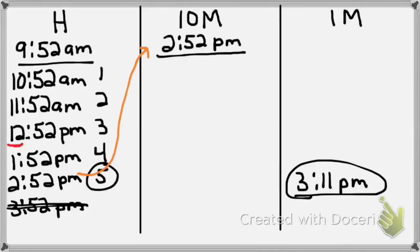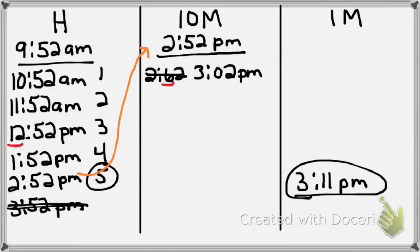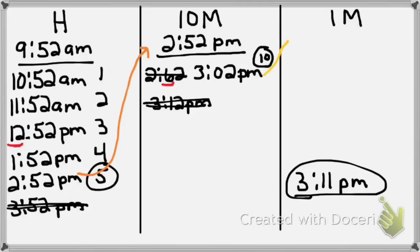Now I count by 10 minutes, making sure not to pass 3:11 p.m. 2:52 plus 10 minutes would be 2:62, but we don't write times like that — it rolls over to 3:02 p.m. Ten minutes after that would be 3:12 p.m., which is later than my end time of 3:11, so I can't use it. I have one 10-minute section. I circle it and save it, then move 3:02 p.m. to the next column and underline it.